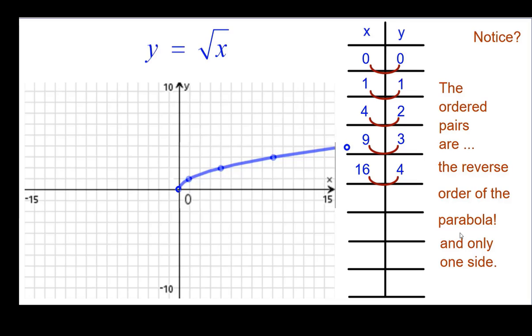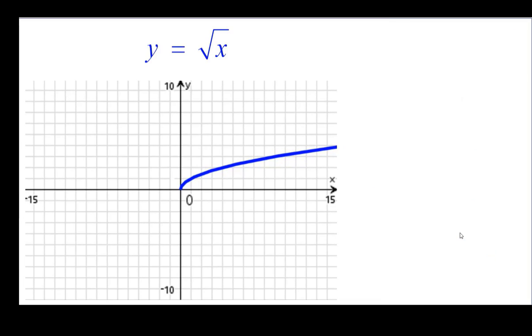So this is what the graph should look like, connecting the dots. Graph of y equals the square root of x, or radical x.